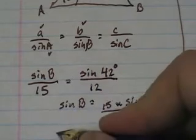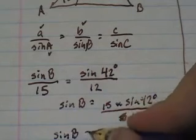And if I multiply all of that out, I'm going to get sine of B equals 0.8364.